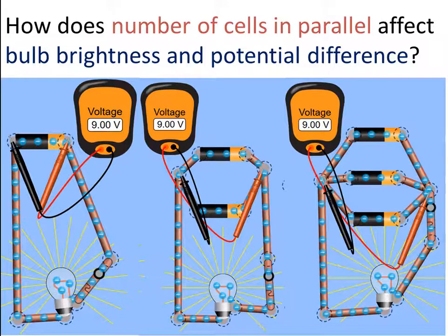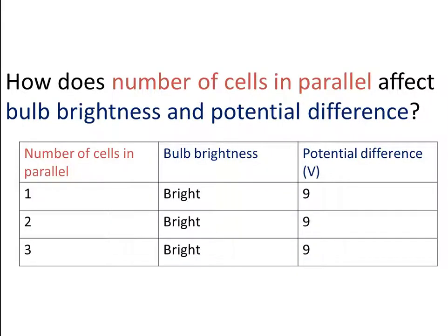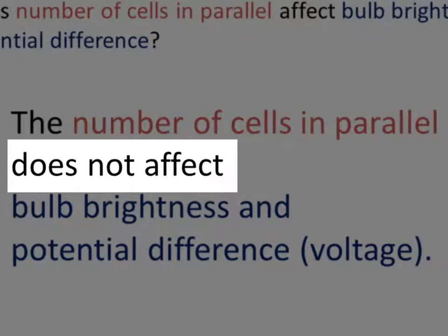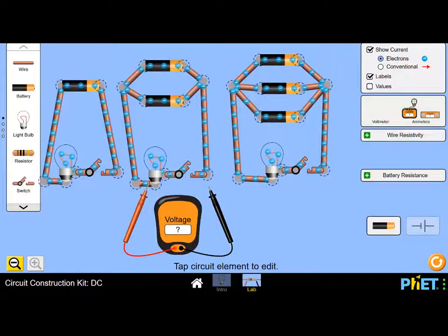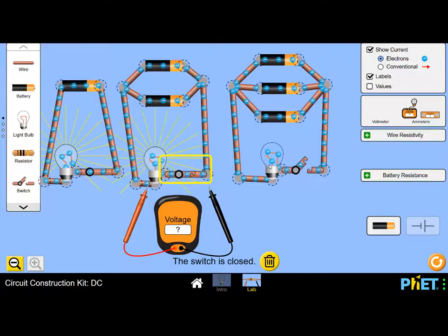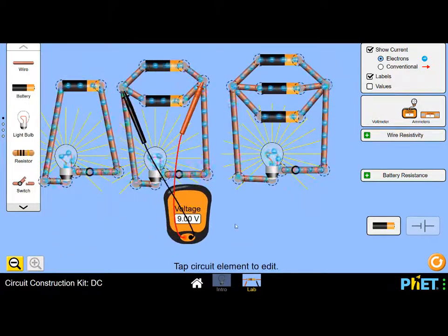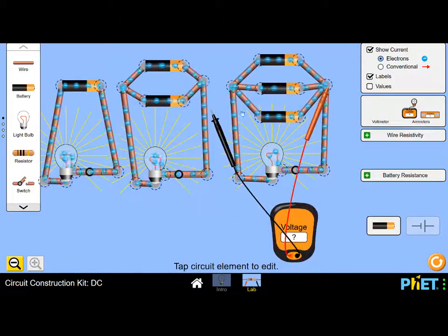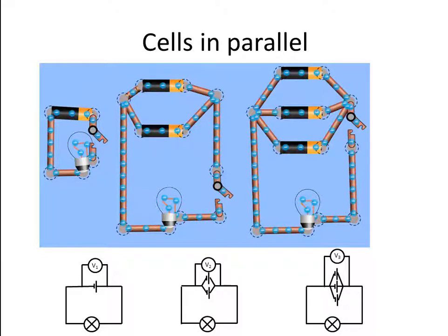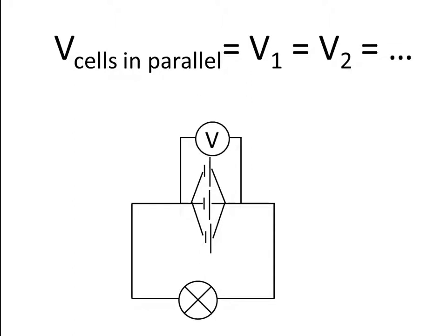How does the number of cells in parallel affect bulb brightness and potential difference? From the data, the number of cells in parallel does not affect bulb brightness, and it does not affect potential difference. It doesn't matter how many cells you add in parallel — the bulb will still shine just as bright and the potential difference across the battery will be the same as with only one cell, assuming all cells have the same voltage. The one thing adding cells in parallel does affect is how long the cells last before going flat — the more cells in parallel, the longer they last.